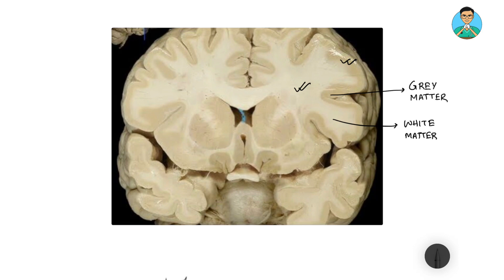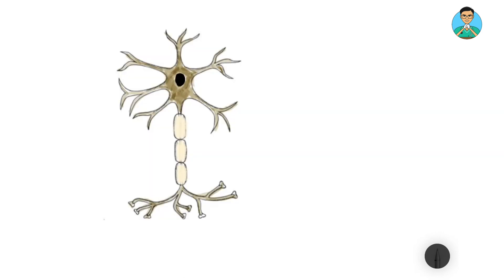These lighter places are known as white matter. Now, why do certain areas appear dark and certain areas appear white? For that, we have to understand at a cellular level. At a cellular level, if we try to learn neuroanatomy, we have to know that the functional and structural unit of the nervous system is a neuron.